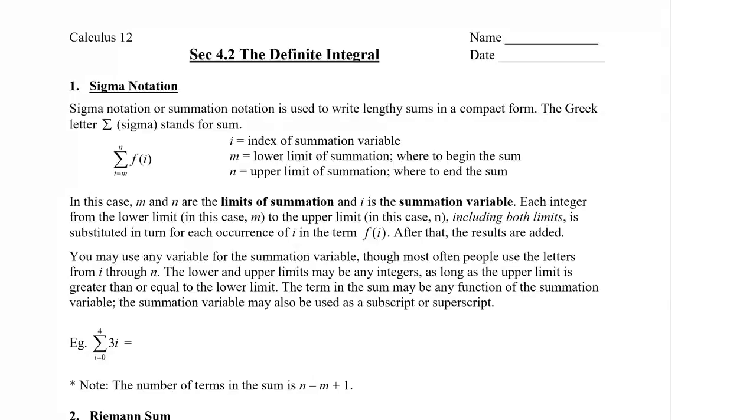Sigma notation, or summation notation, is used to write lengthy sums in a compact form. The Greek letter sigma, which looks like a fancy E, is used and it stands for the sum. The sigma notation has underneath it an i equals m. The i stands for the index of summation variable, and the m is a lower limit of summation. And this is where the sum begins.